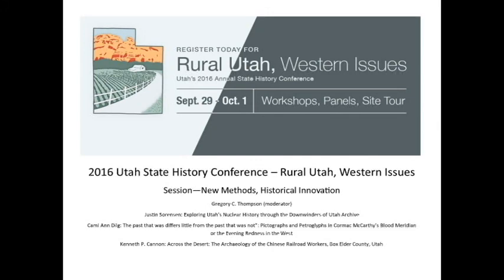I'm going to run through some of the artifacts and features identified out there. Those depressions probably represent some of the Chinese living areas. We also have a map from 1870 showing structures from the Central Pacific Railroad that we can relate to the archaeological record. Ombi is another section station with a similar type of distribution of artifacts, and again we used a Central Pacific Railroad map to try to interpret the archaeological remains.